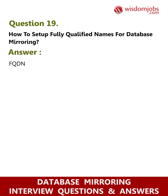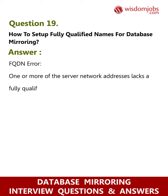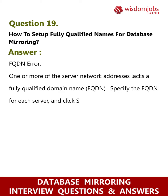Question 19: How to set up fully qualified names for database mirroring? Answer: If you encounter an FQDN error — 'One or more of the server network addresses lacks a fully qualified domain name (FQDN)' — specify the FQDN for each server and click Start Mirroring again.